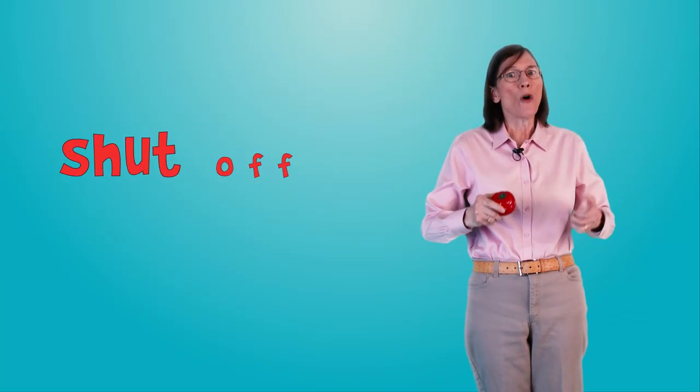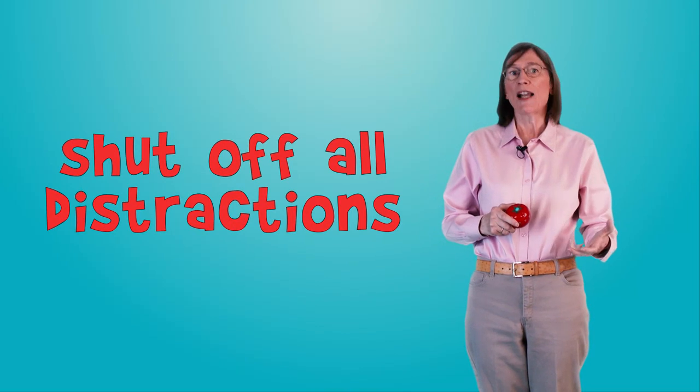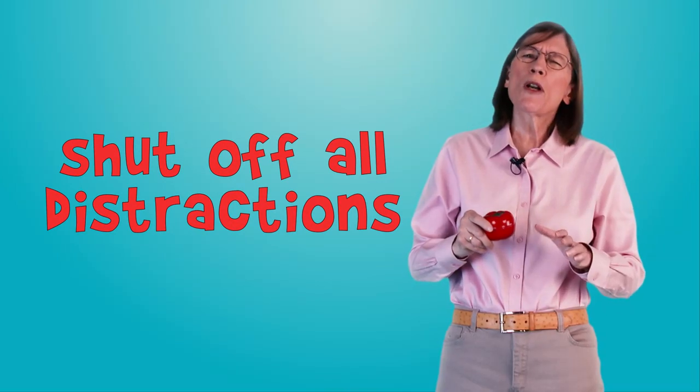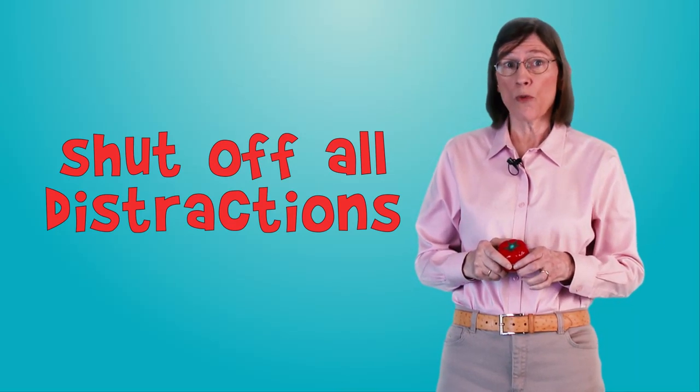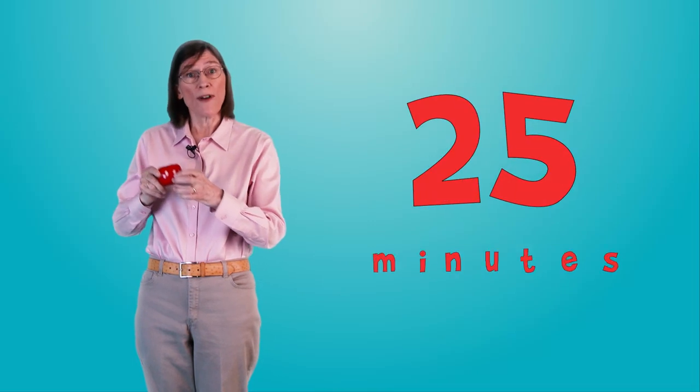Here's how to do a Pomodoro. First, as much as you can, shut off all distractions. The television, your phone, your little brother. You want to be able to focus as intently as you can without being interrupted. Then, set your Pomodoro timer for 25 minutes.